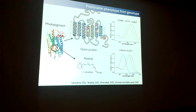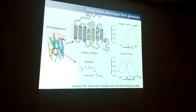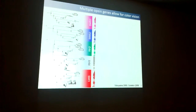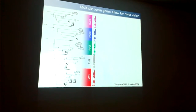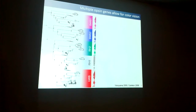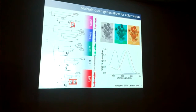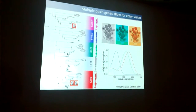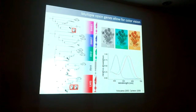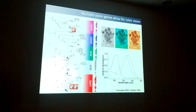Another reason why opsins are great is because there have been duplications, so we can use them to see different colors. For example, as humans here, we have three of them, and we have trichromatic vision.